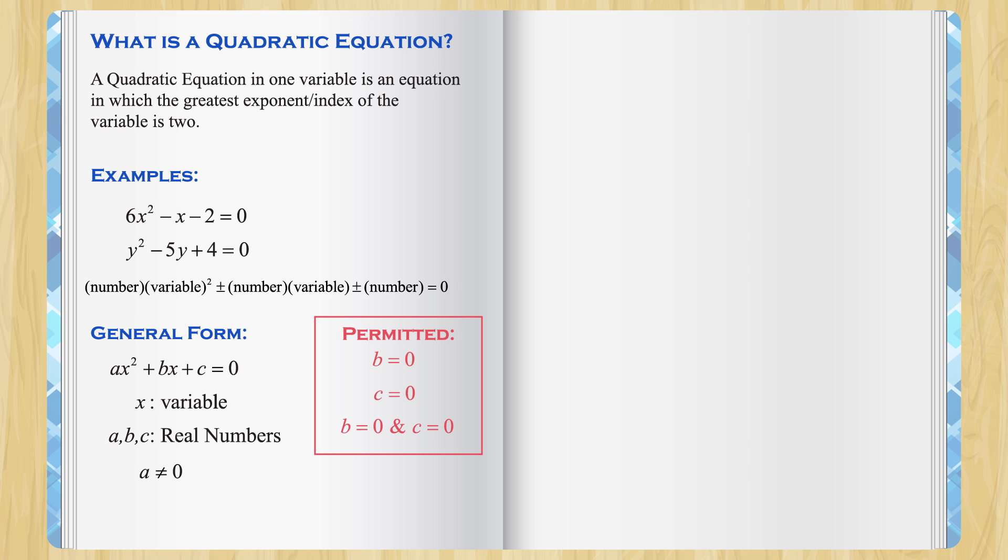By now, you probably have a question. In example 1, there are negative signs here, but the general form has only positives. How come?